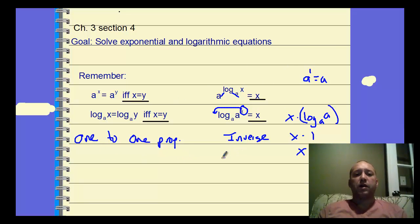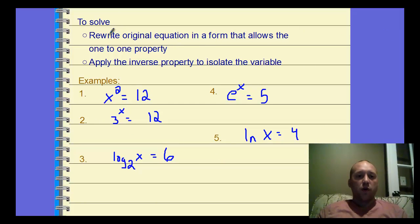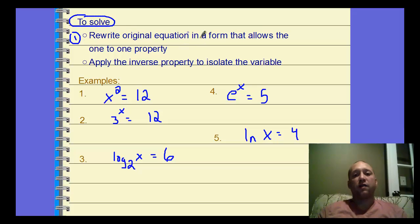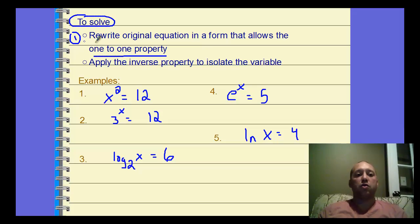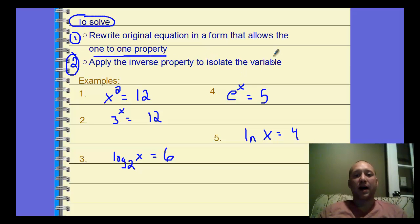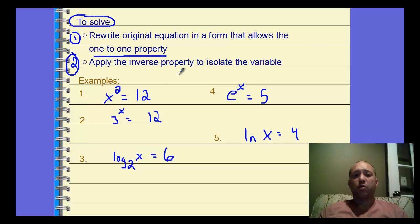We're going to use these two properties to help us solve log and exponent equations. We have two strategies: one is to rewrite the original equation in a form that allows the one-to-one property — get the two bases equivalent so you can set the exponents equal. Two, if you cannot do that, apply the inverse property to isolate the variable. You may need to isolate the log or the power first before applying the inverse property.